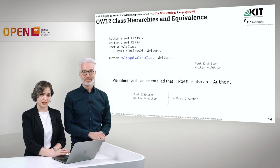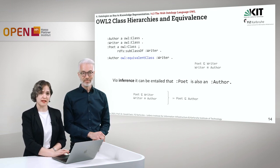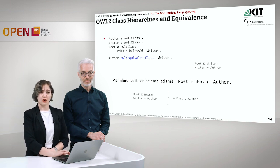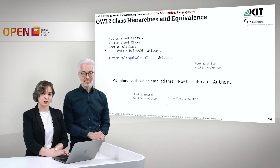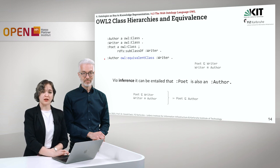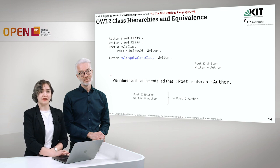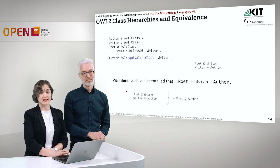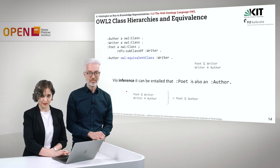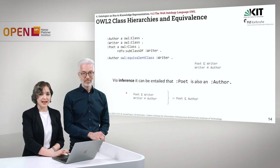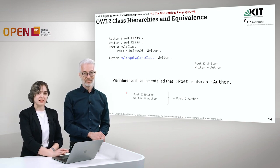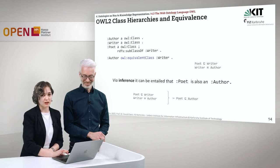OWL2 also provides equivalent classes. For example, Author is defined as an equivalent class to Writer using owl:equivalentClass. Combined with the fact that Poet is a subclass of Writer, we can infer that Poet is also an Author. This equivalence can be helpful in certain situations when we want to infer rules.